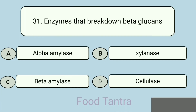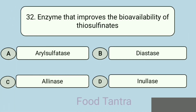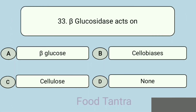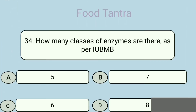Question 31: Enzymes that break down beta-glucans — Option A: Alpha amylase. Option B: Xylanase. Option C: Beta amylase. Option D: Cellulases. Correct answer: Cellulases. Question 32: Enzyme that improves the bioavailability of thiosulfinates — Option A: Aryl sulfatase. Option B: Diastase. Option C: Alliinase. Option D: Enolase. Correct answer: Alliinase. Question 33: Beta-glucosidase acts on — Option A: Beta glucose. Option B: Cellulose. Option C: Cellulose. Option D: None. Correct answer: Cellobiose.